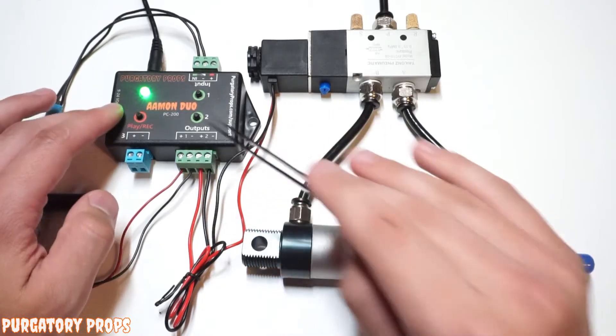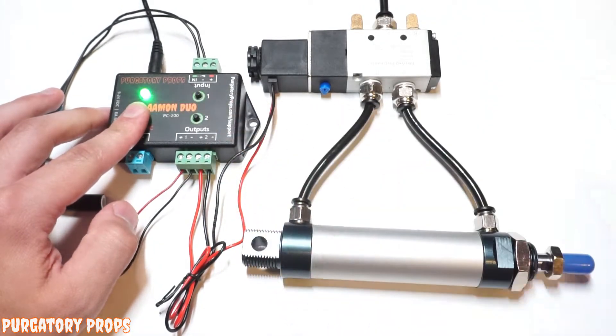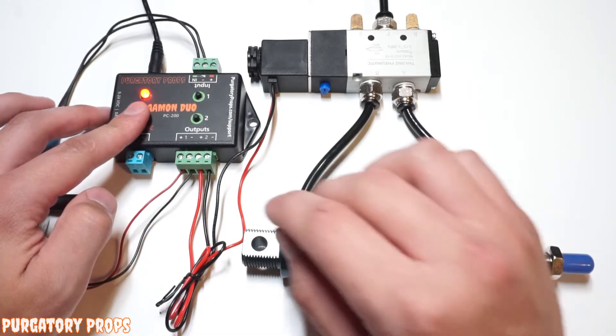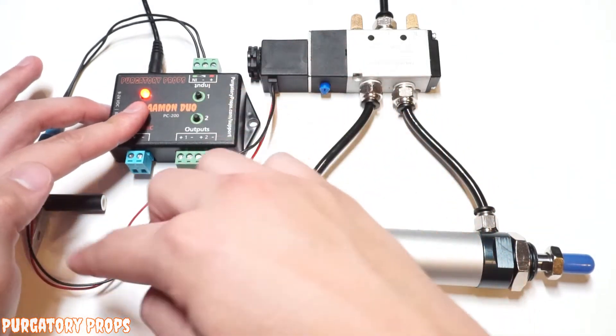So to record, all you need to do is hold the play record button until the LED turns red. Now when you release this button, it will immediately start recording. So when you do start recording, you're going to push one and two, and that will control the outputs.